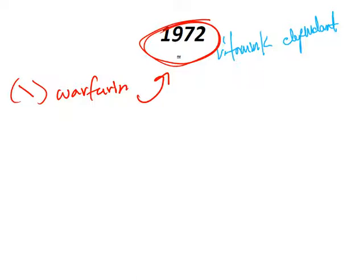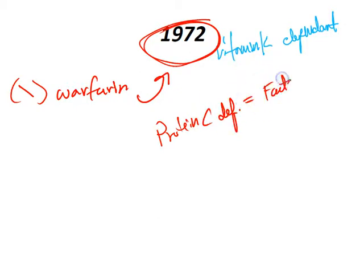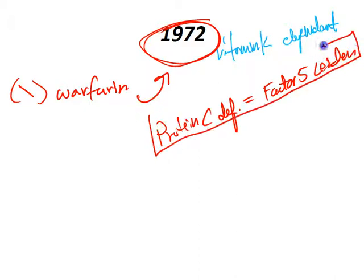That's why you have to start heparin first in case somebody has a protein C deficiency. A protein C deficiency is essentially a factor V Leiden deficiency. If you give somebody with a factor V Leiden deficiency — the most common one — warfarin without starting heparin first, they'll get skin necrosis. You'll see them clotting more, and if you give more warfarin, do not do that — you will get malpractice.